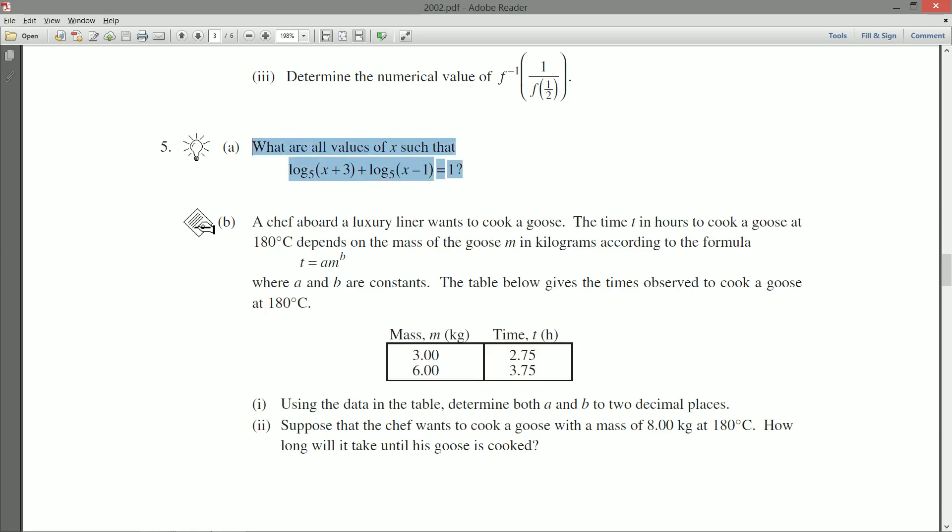So what does A say? A is just final answer. What are all the values of x so that log base 5 of x plus 3, plus log base 5 of x minus 1, is equal to 1?